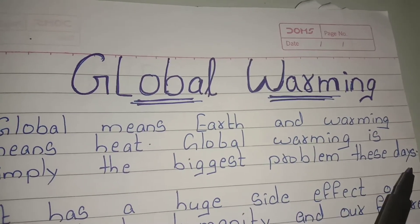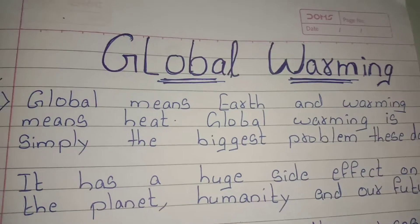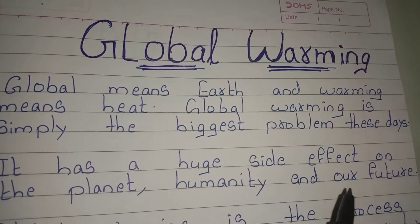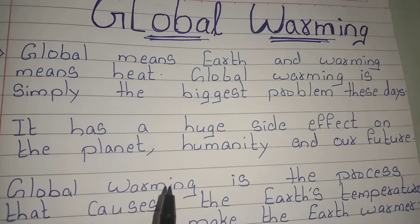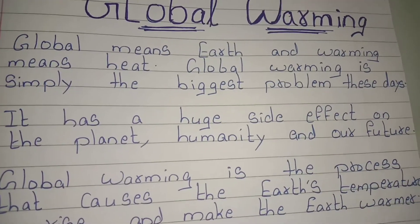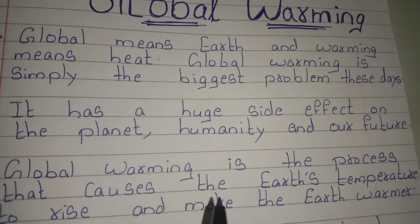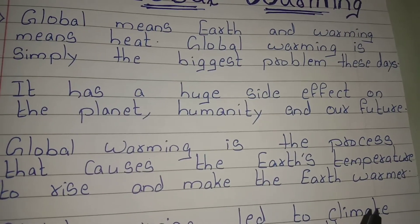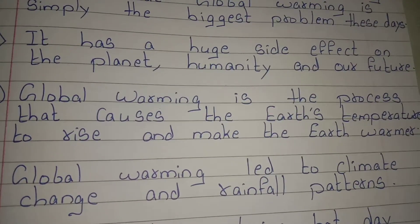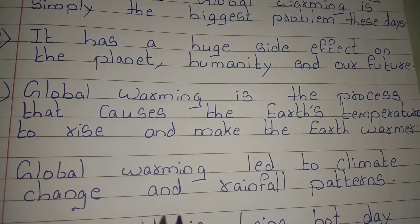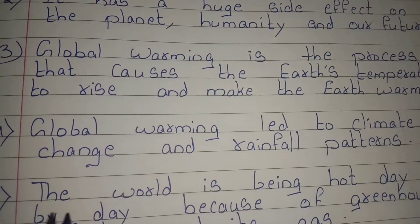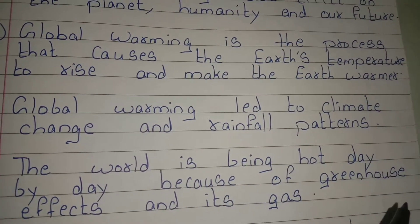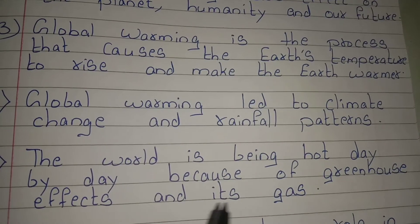It has a huge side effect on the planet, humanity, and our future. Global warming is the process that causes the earth's temperature to rise and make the earth warmer. Global warming leads to climate change and changes in rainfall patterns. The world is getting hotter day by day because of the greenhouse effect and its gases.